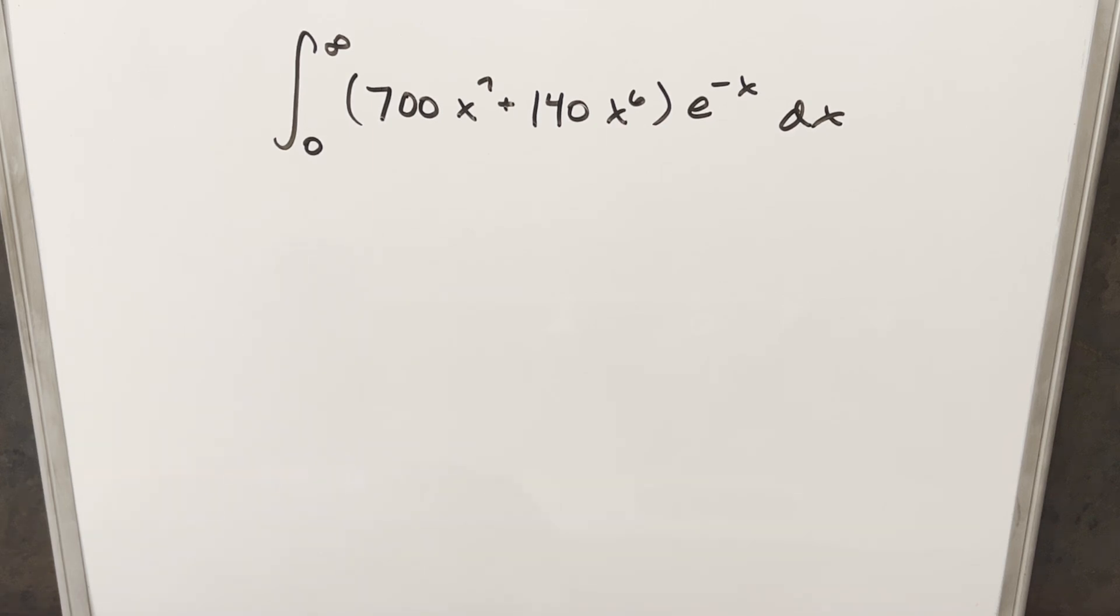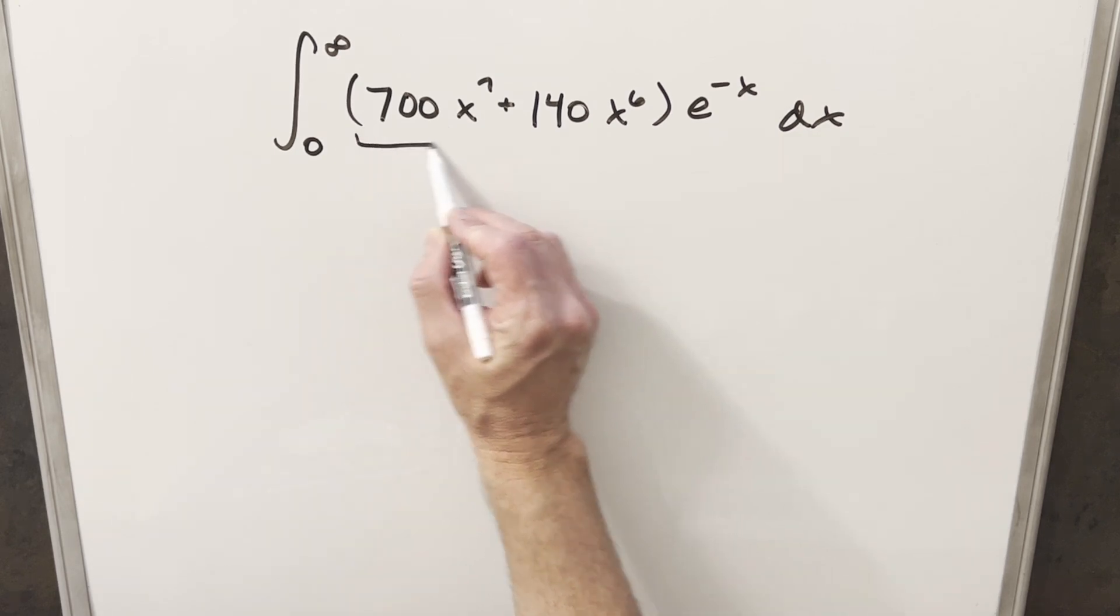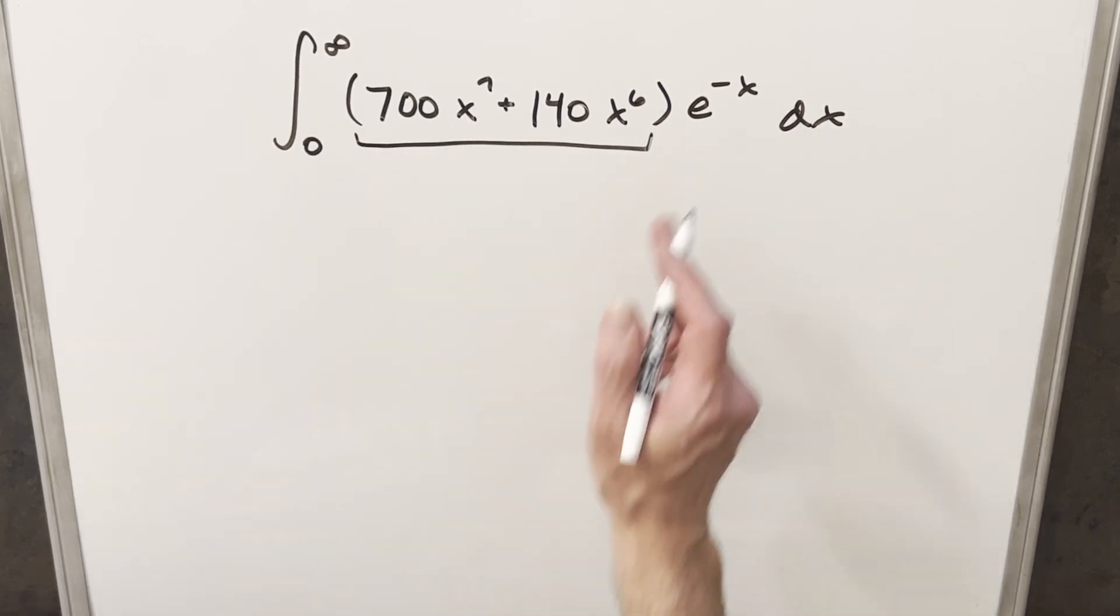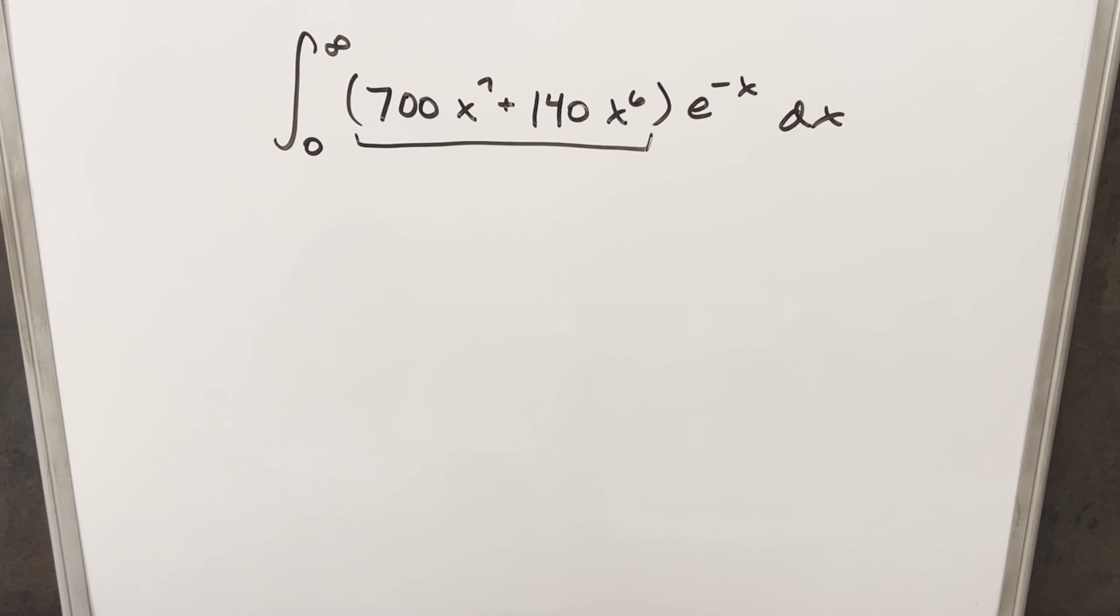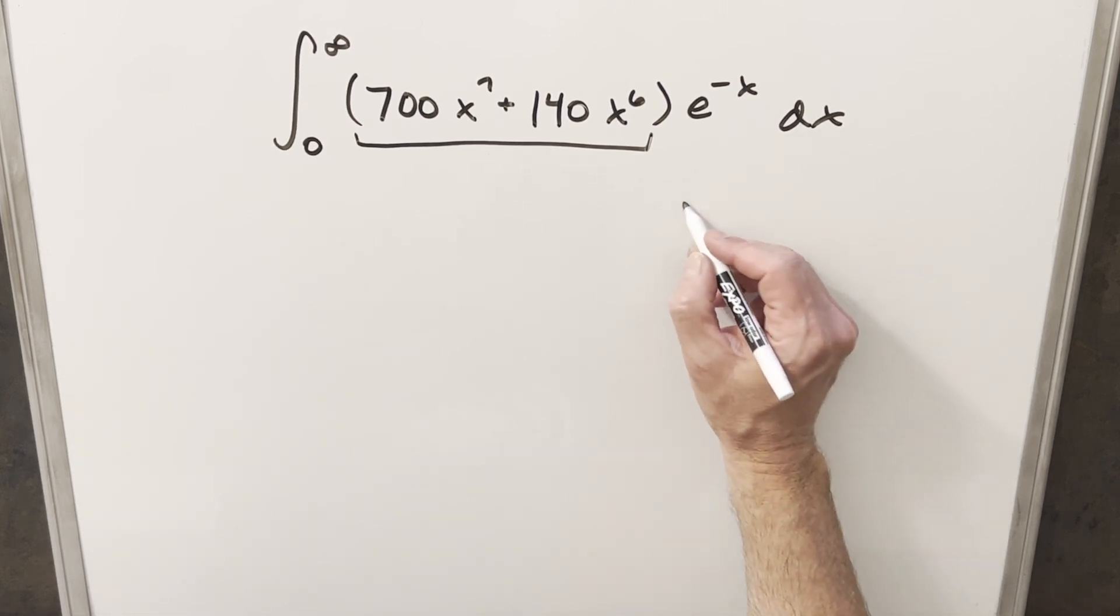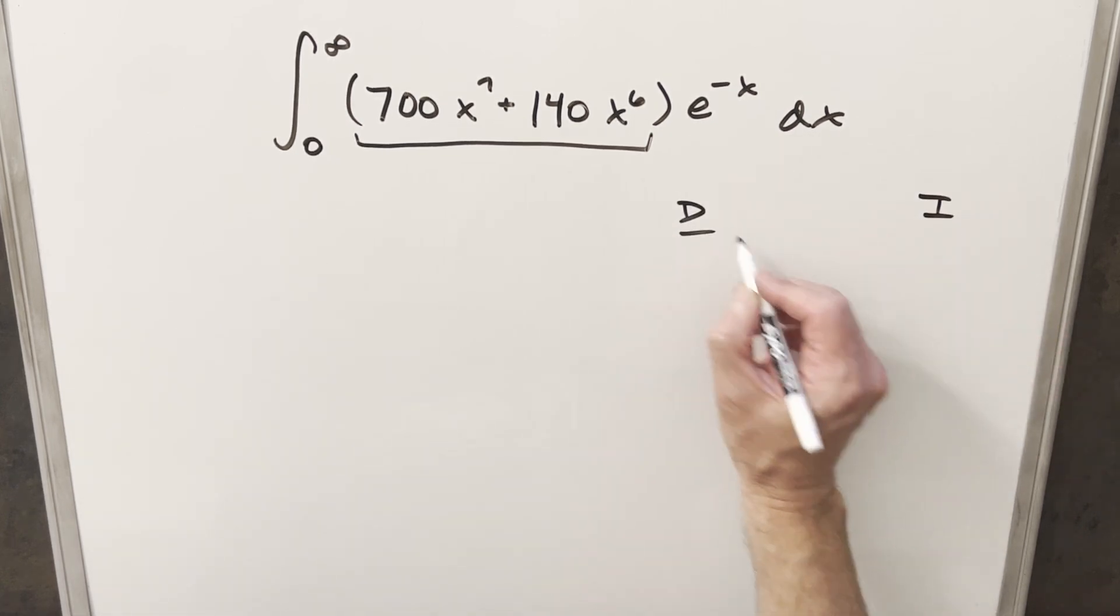Okay, I actually adapted this one from a problem on the MIT integration bee. Very similar, and what I'm going to do is we're going to use the same method on this one where we just notice we have a polynomial here and we've got a second part, e^(-x).